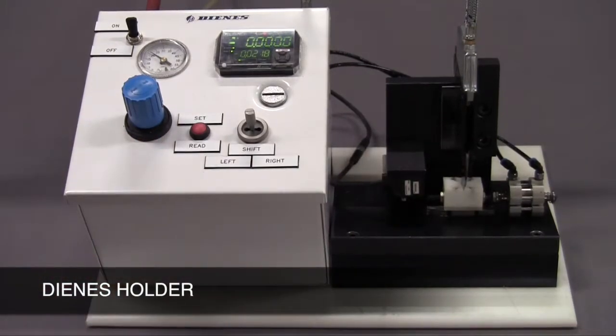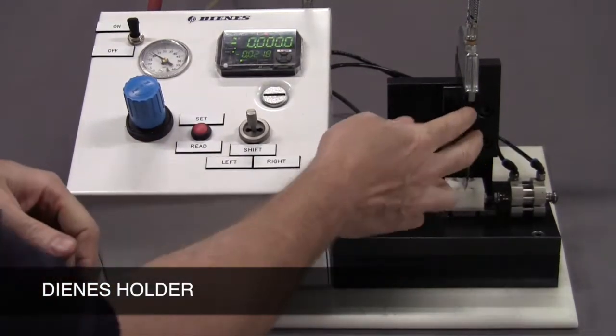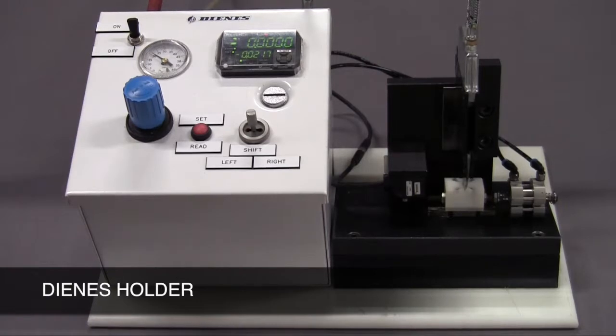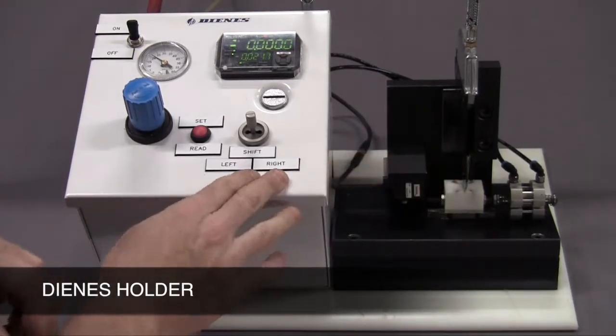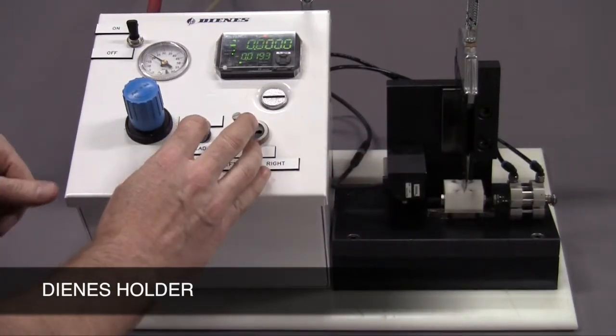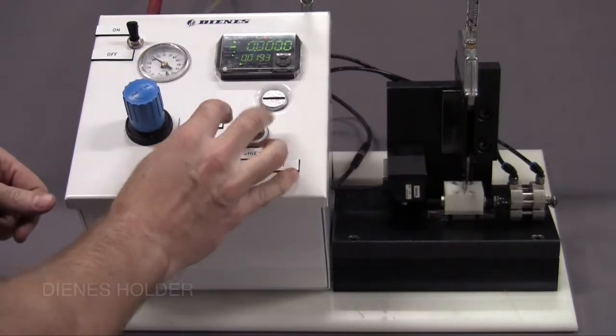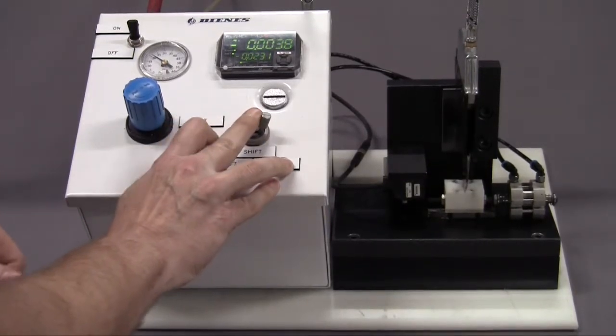So here we have a wobble testing fixture. What we do is this is a brand new Deans knife holder right from stock. We put it on our tester, bring it over all the way to the left, set our readout, bring it all the way to the right, read it.